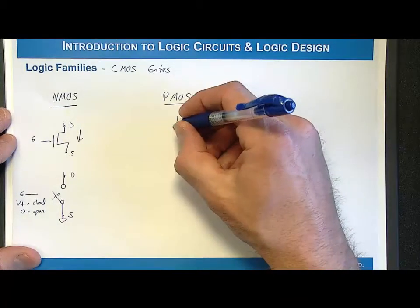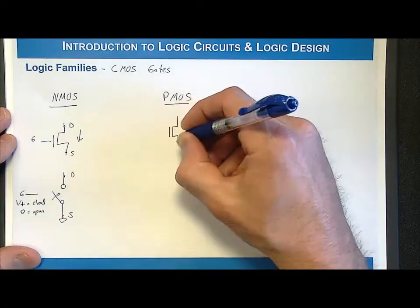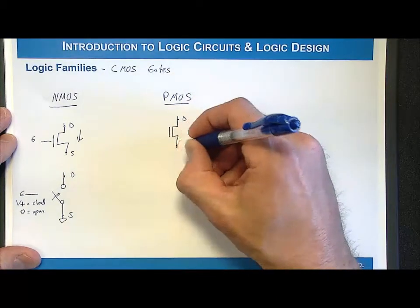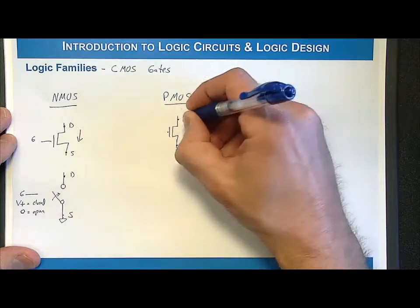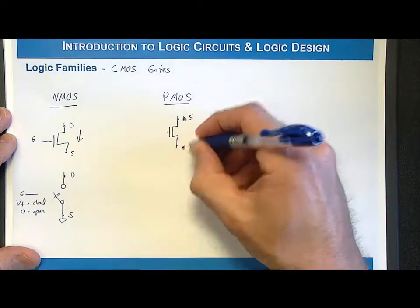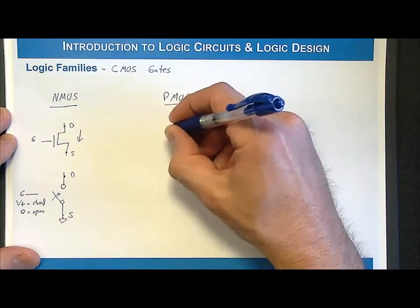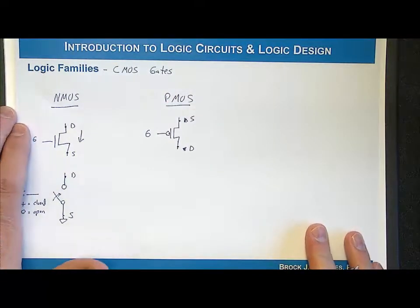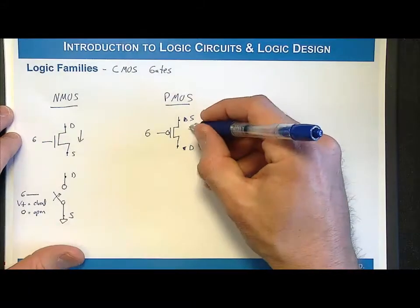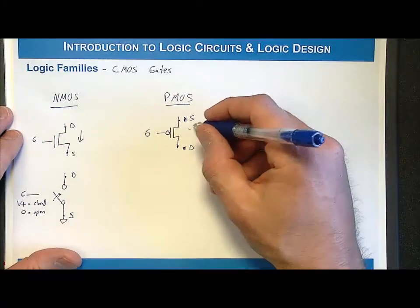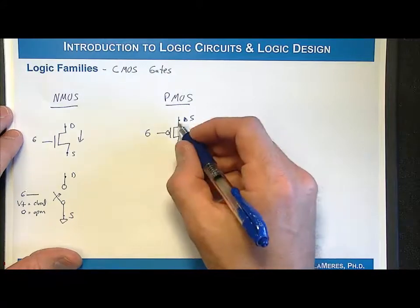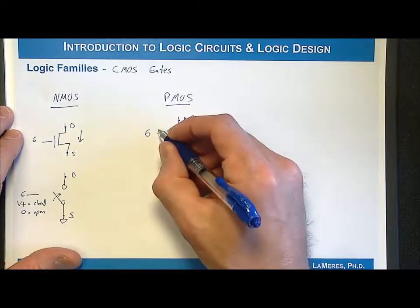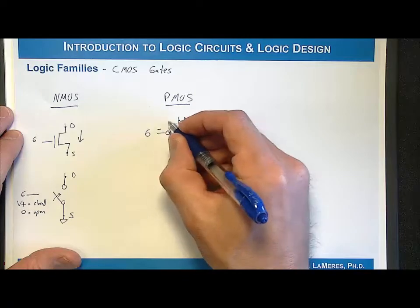Now let's take a look at the PMOS. We're going to have our source up there and our drain right there. We know it's a PMOS because we have the inversion bubble. In order to turn this on and let current flow, we need to produce a negative voltage with respect to the source at the gate. So the gate voltage needs to be lower than the source voltage.